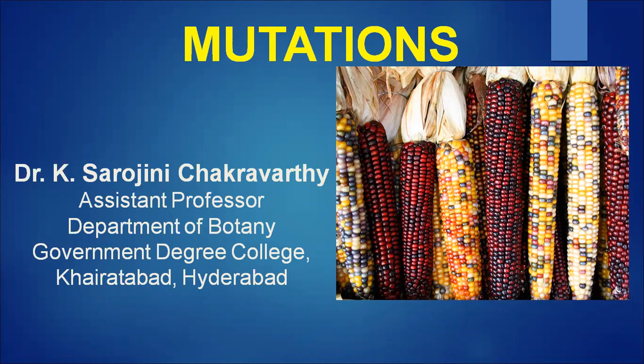In today's class we will continue with mutations. In the last class we saw what are mutations, what is the significance of mutation, what are the different types of mutations and their classification — including induced mutations of two types: those caused by physical mutagens such as X-rays, beta-rays, gamma-rays, UV-rays, and those caused by chemical mutagens, of which we saw six different types and what they cause.